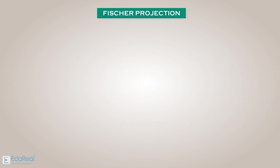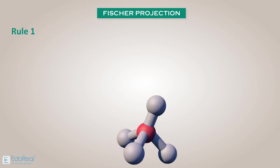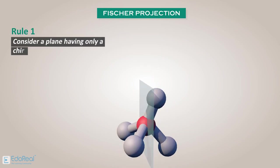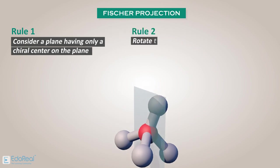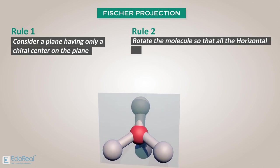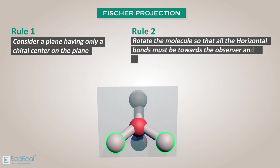There are certain rules to be followed while drawing Fischer projection. Rule 1: Consider a plane having only a chiral center on the plane. Rule 2: Rotate the molecule so that all the horizontal bonds must be towards the observer, and vertical bonds must be away from the observer.